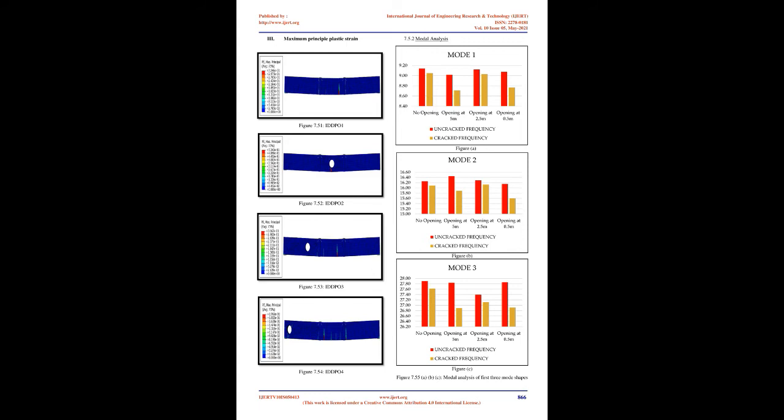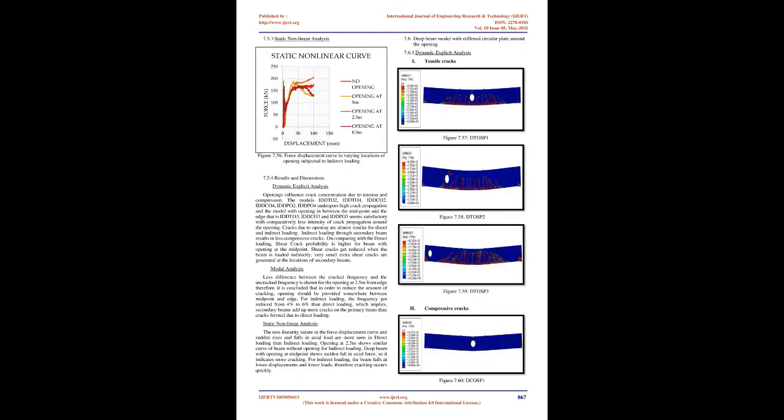Therefore, higher the shear span to depth ratio, lesser will be the propagation of tensile cracks and compressive cracks. However, this ideology of crack reduction at high shear span to depth ratio is contradicted in the case of maximum principal plastic strain. Since plastic strain is regarded as an indicator of shear cracking, it will be in rapid propagation at higher shear span to depth ratio. Hence, for plastic strain, less shear span to depth ratio is economical.